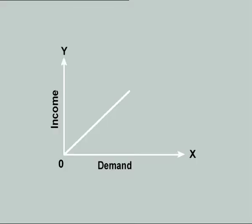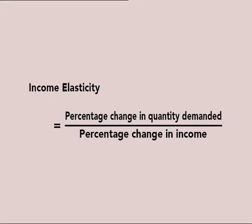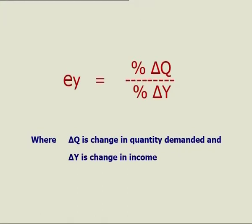Income Elasticity of Demand. Just like price, other determinants of demand such as income and related goods also affect quantity demanded, and their responsiveness is measured similarly. A direct relationship exists between the level of consumer income and the quantity demanded. Income elasticity of demand is defined as the ratio of percentage change in quantity demanded to the percentage change in income. It is measured by the formula: EY = (% ΔQ) / (% ΔY), where ΔQ is the change in quantity demanded and ΔY is the change in income.